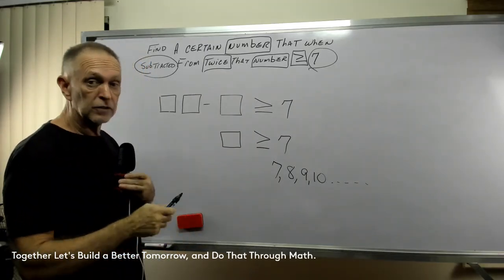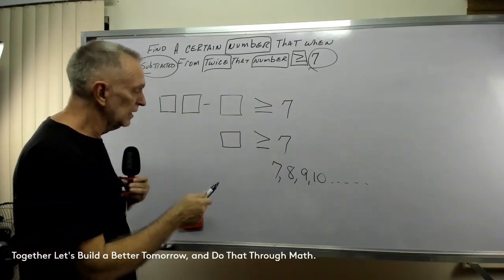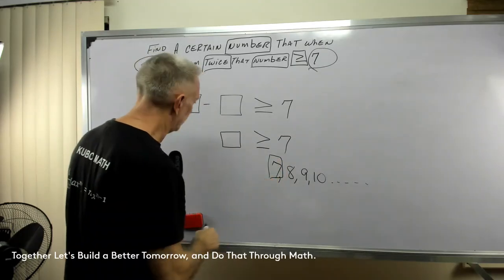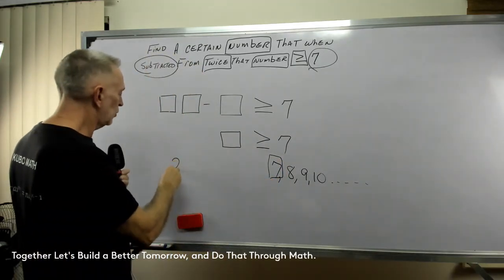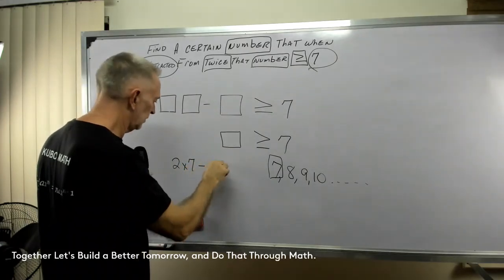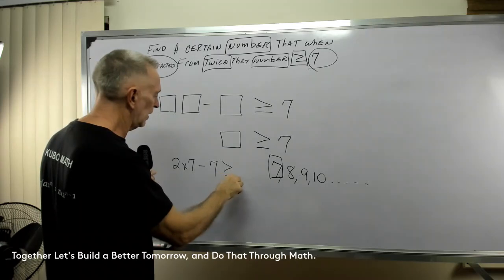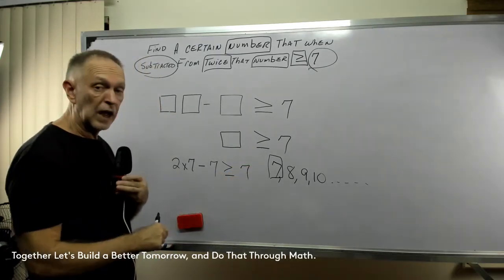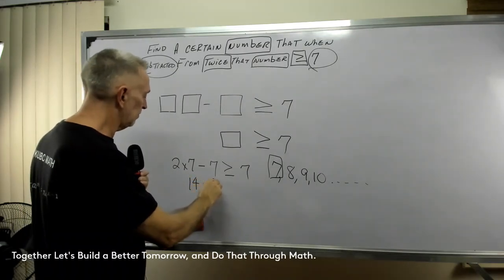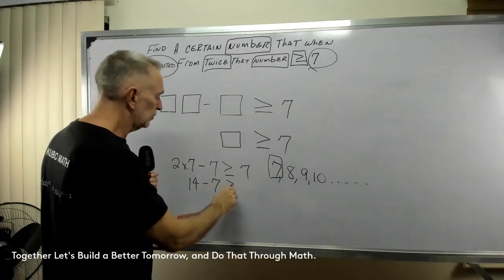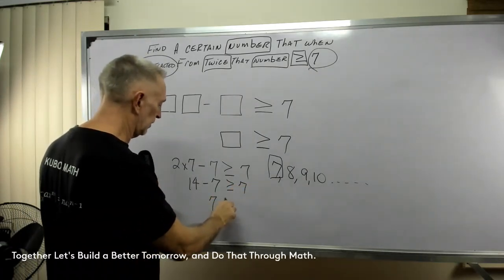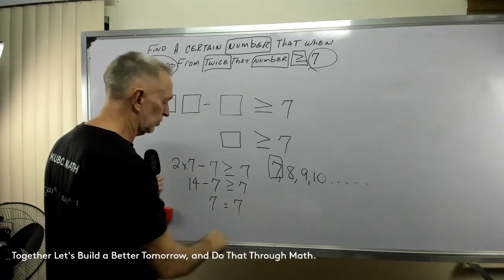So, let's plug in some numbers and see if that's correct. So, let's try this first one, 7. It's saying 2 times 7 minus 7 is greater than or equal to 7. What's 2 times 7? It's 14. 14 minus 7, is it greater or equal to 7? 14 minus 7 is 7, and that is equal to 7.